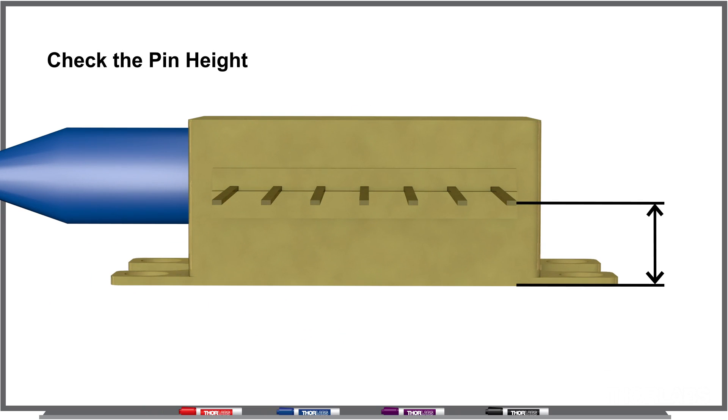The first is the height of those pins. What is the distance from the bottom of the butterfly package to the center of the pin? You want to ensure that when you put your butterfly laser in the mount, the bottom of the butterfly package is in contact with the metal on the inside of your mount.